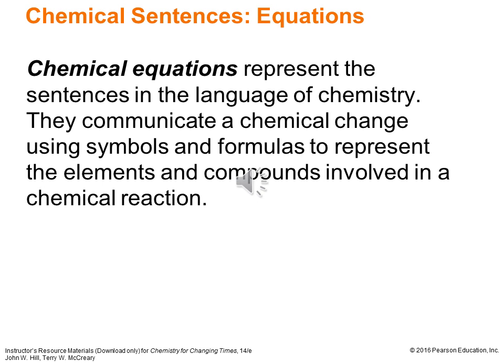One of the hallmarks of students who've taken college-level chemistry is that they are able to read chemical equations. Chemical equations are really just chemical sentences — they communicate chemical change using symbols and formulas to represent the elements and compounds involved in a chemical reaction. This stuff that may have looked off-putting and difficult to understand: after just a little bit of practice, you'll be able to read from left to right our chemical sentences, just like you've been reading sentences in English.